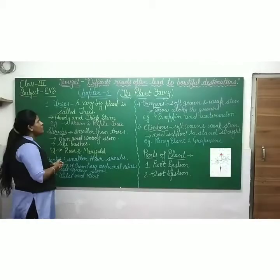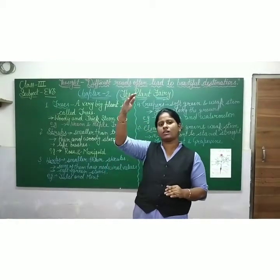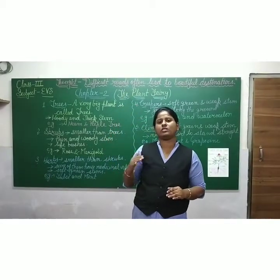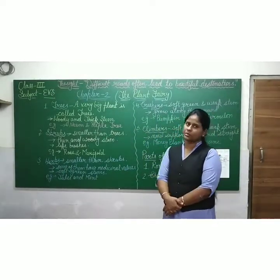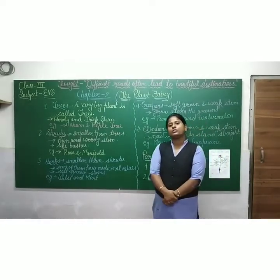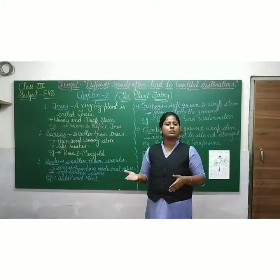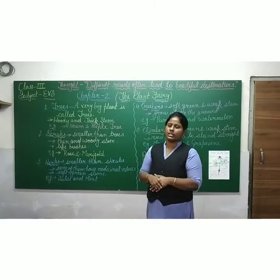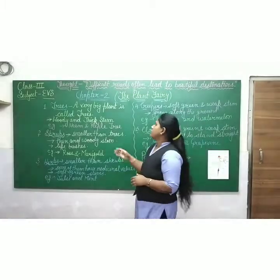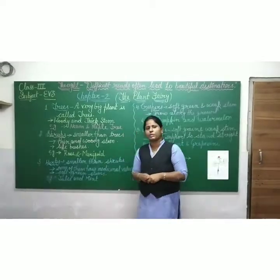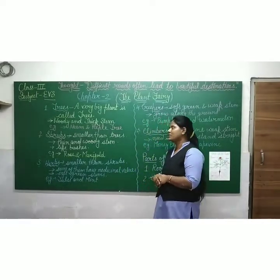First: trees. A very big plant is called a tree. Trees have a big, thick stem called the trunk, and they have a lot of branches. For example: neem, mango tree, orange tree. There are many types of trees you can see around you.